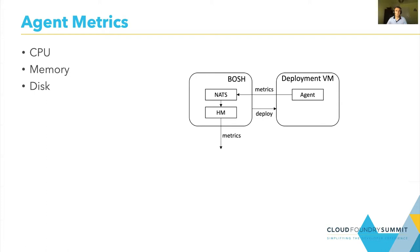Let's look into the VM metrics. One source for VM metrics is the BOSH agent itself. The BOSH agent can collect metrics and forward them to the message bus, and from the message bus to the director. From there, you can forward them with the help of health monitor to your monitoring stack. The metrics are about CPU, memory, and disk usage.